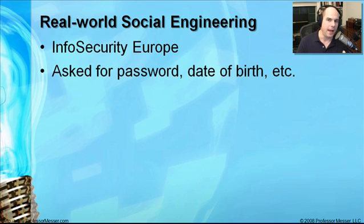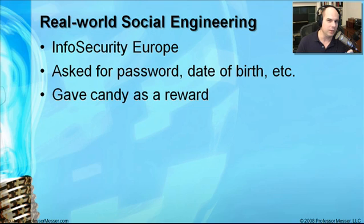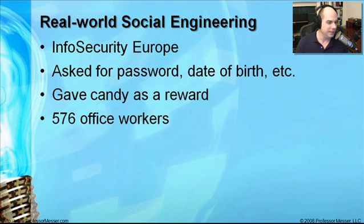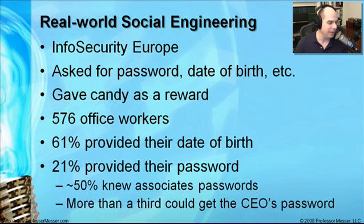What they do is show up at a train station in London and ask people for their password, their date of birth, and some other personal information that people really shouldn't be giving out. The real trick is they say they'll give you some chocolate if you give them your password. This past year they asked 576 people coming off the train — 61% of them provided their date of birth and 21% of them provided their password, all for some chocolate.